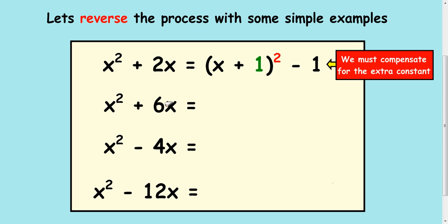Next one, x² + 6x. The bracket's going to be (x + 3)². But if I multiplied this out, I would get x². I would get a 3x and another 3x to get the 6. But I'd also get a +9. I don't want that, so I'll take it away.